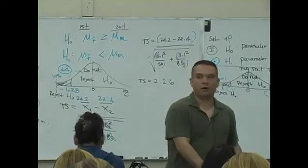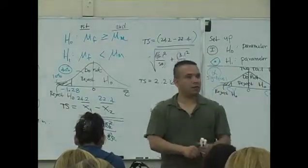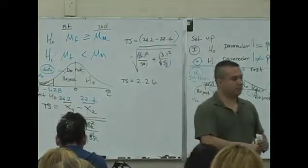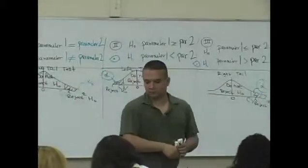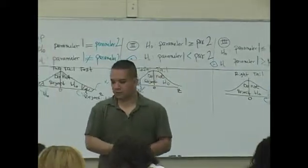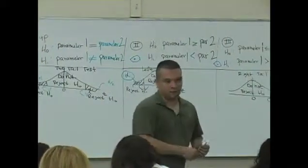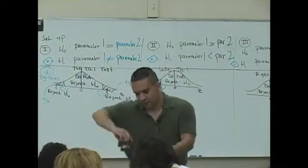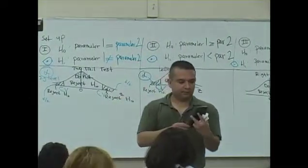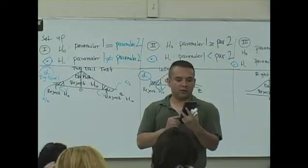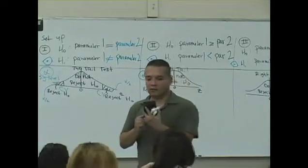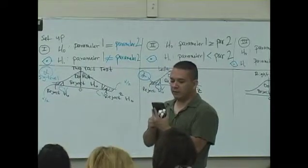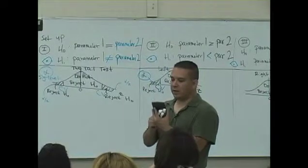2.84? Let's see. Let's see what it's going to be. 2.2. Let's see. 24.2 minus 22.4 divided by 5.1 squared divided by 50 plus 3.1 squared divided by 85. I've got 2.26.